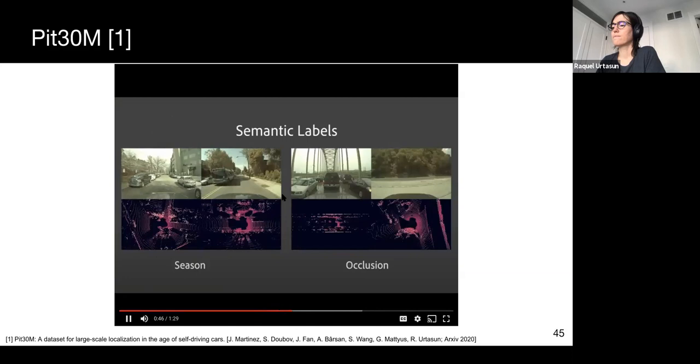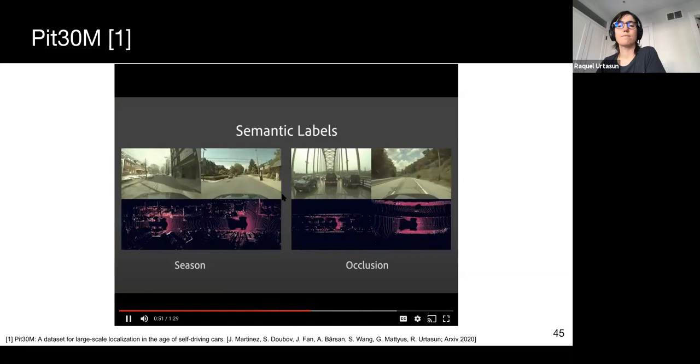Our dataset also provides a set of labels that allow researchers to better understand the limitations of current localization algorithms. For example, we provide sun angle, season, temperature, precipitation, and semantic segmentation as a proxy for occlusion.